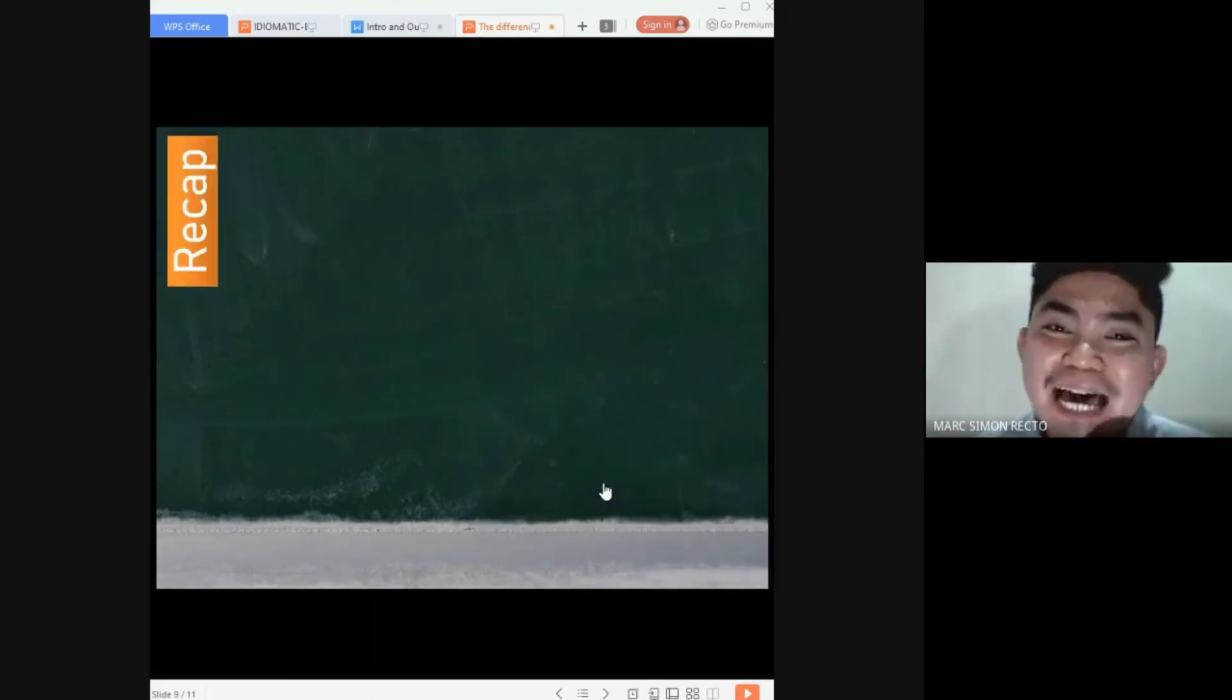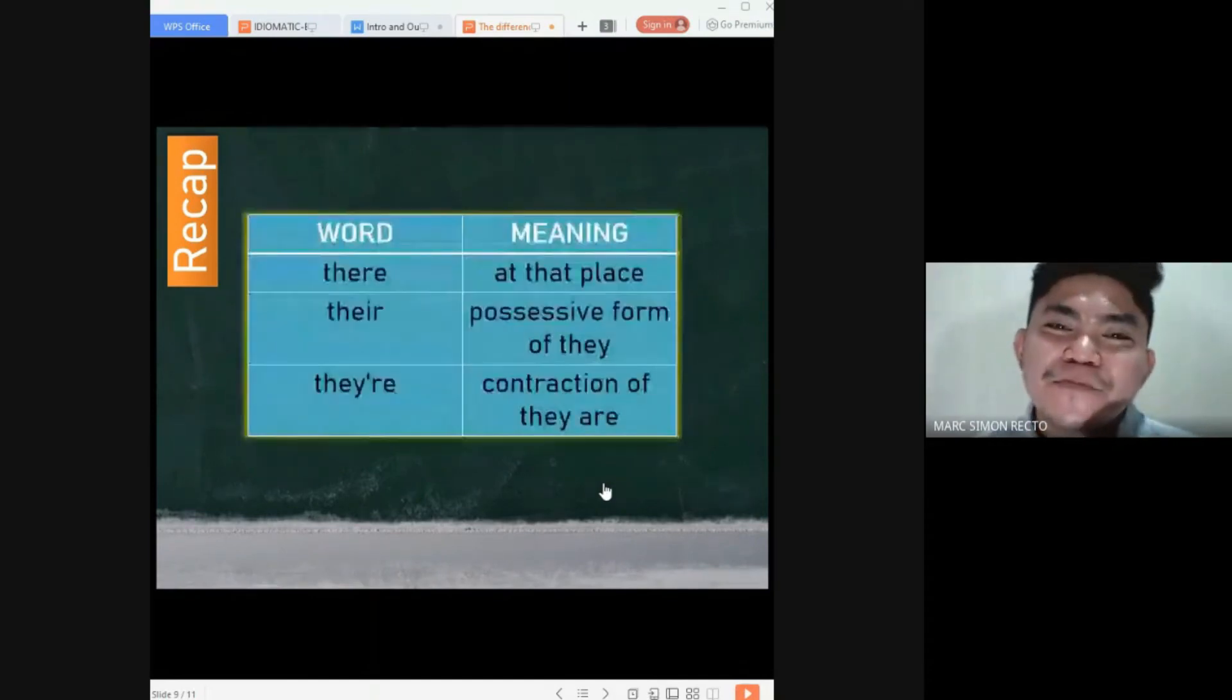Let's have a recap first before you answer that activity. The words here, there, there, there. The first word is spelled as T-H-E-R-E meaning at that place. Then there, T-H-E-I-R meaning possessive form of they. Then, the last word is there, spelled as T-H-E-Y apostrophe R-E meaning contraction of they are. I am pretty sure that you are ready to take the activity or the quiz itself.